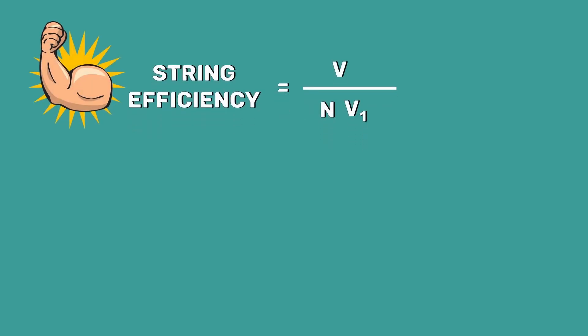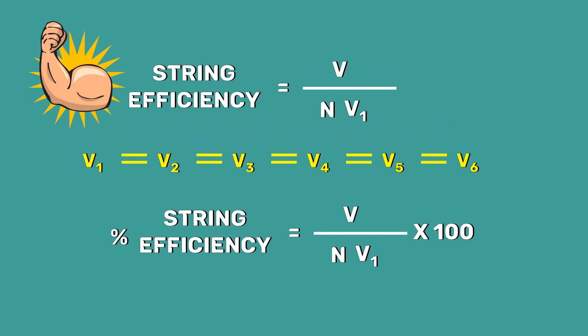The greater the string efficiency, the more uniform the voltage distribution. 100% string efficiency is an ideal case. This means the voltage across each disc will be the same. Although it is impossible to achieve this, effort should be made to improve this value as closely as possible.